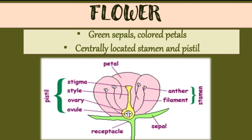Next part is flowers. Flowers have green sepals and colored petals. The flower also has centrally located stamen and pistil. Stamen contains anther and filament. Pistil contains four parts: stigma, style, ovary, and ovule.